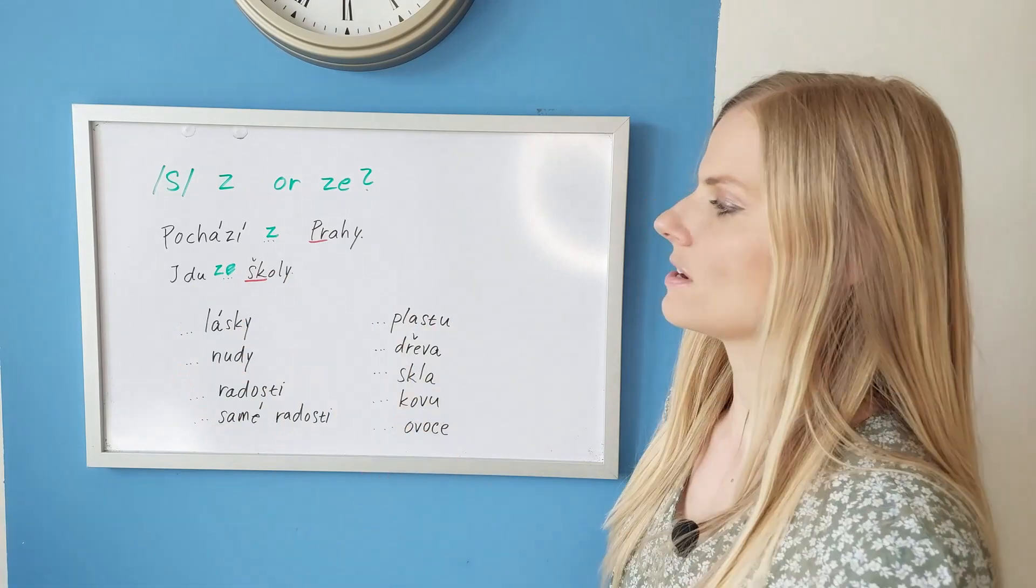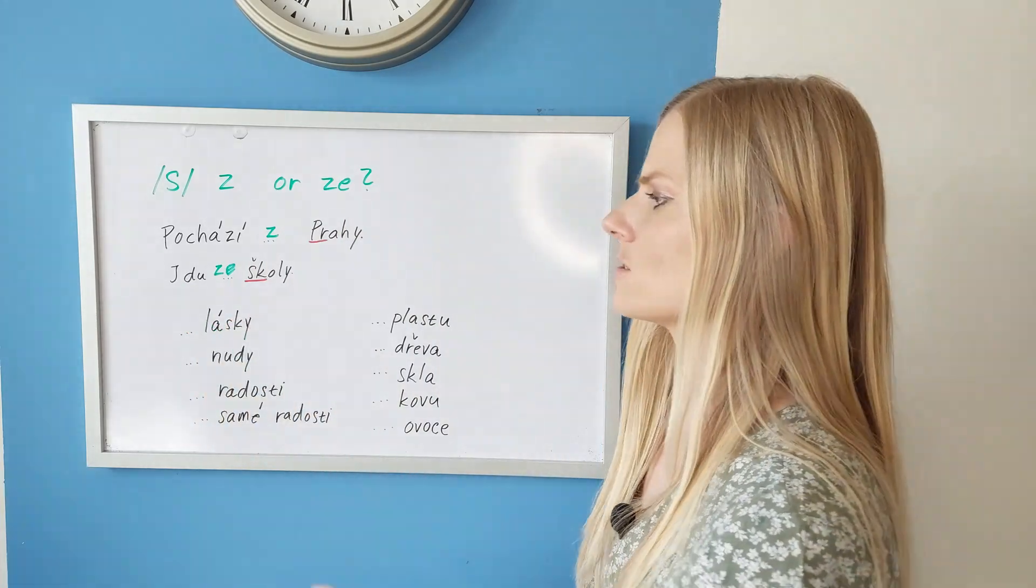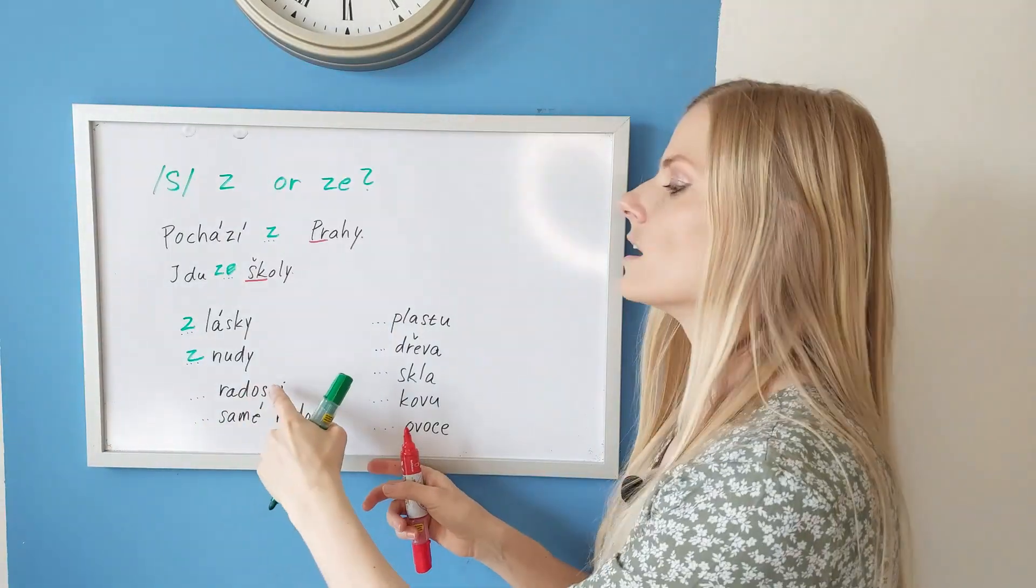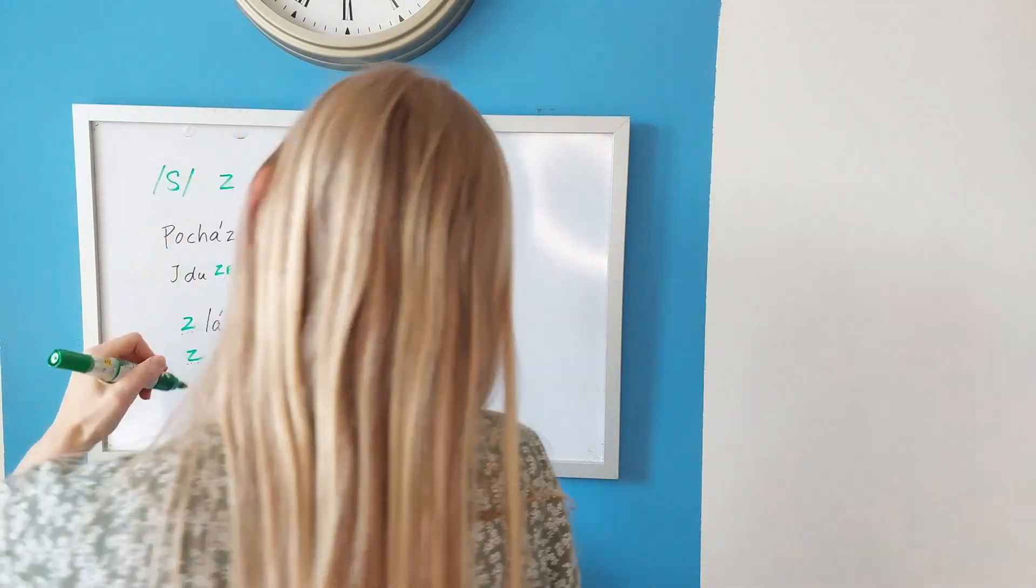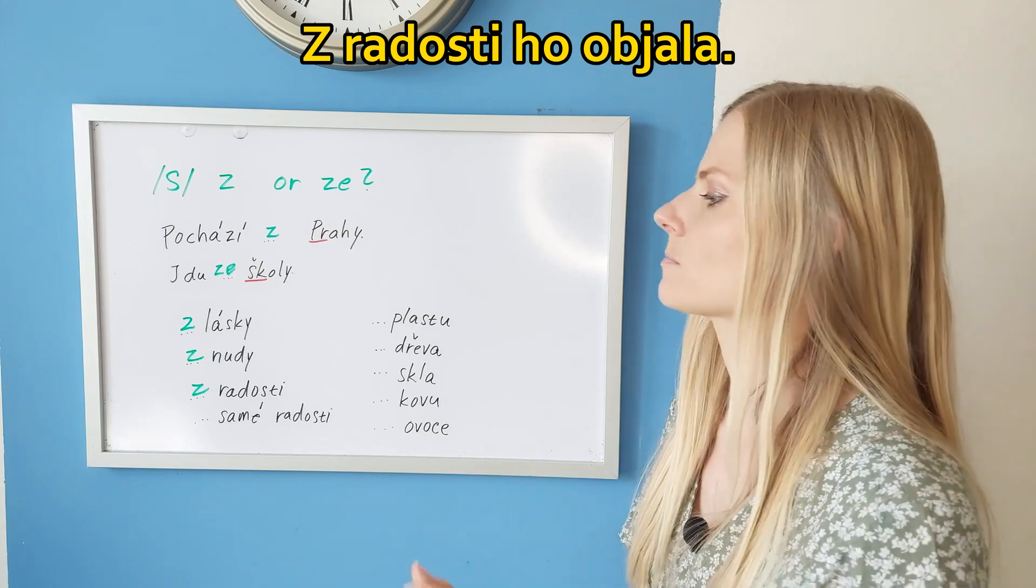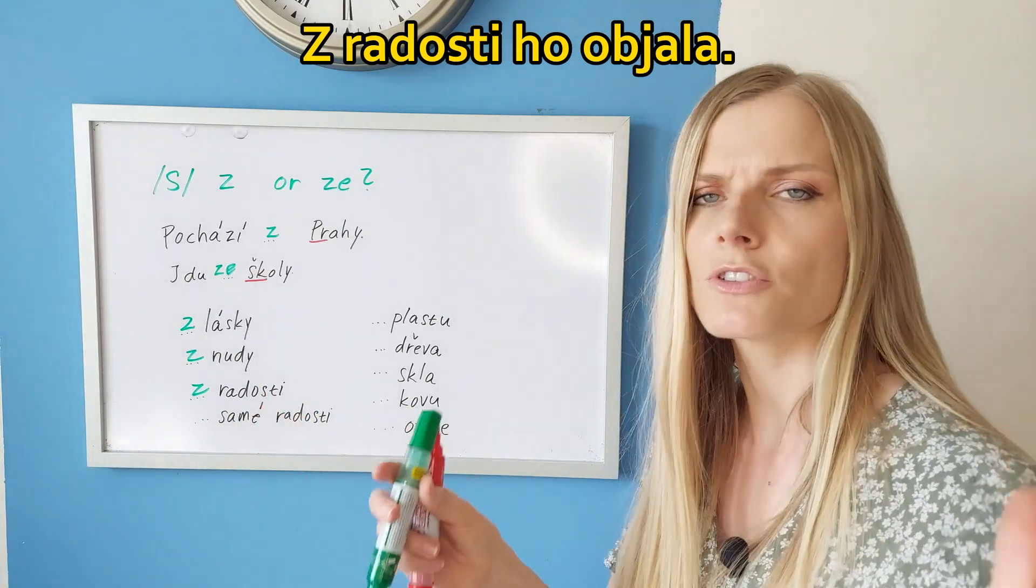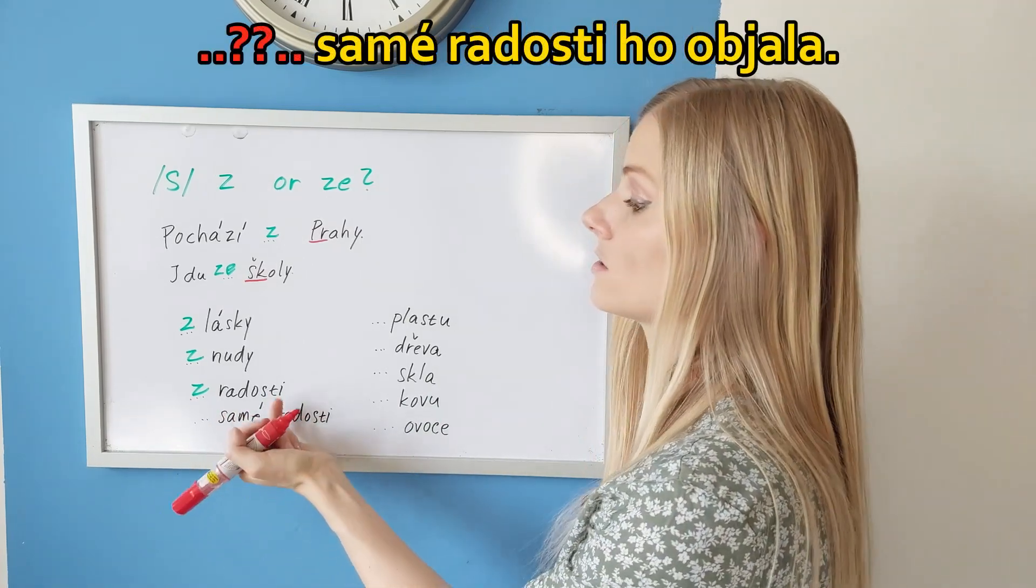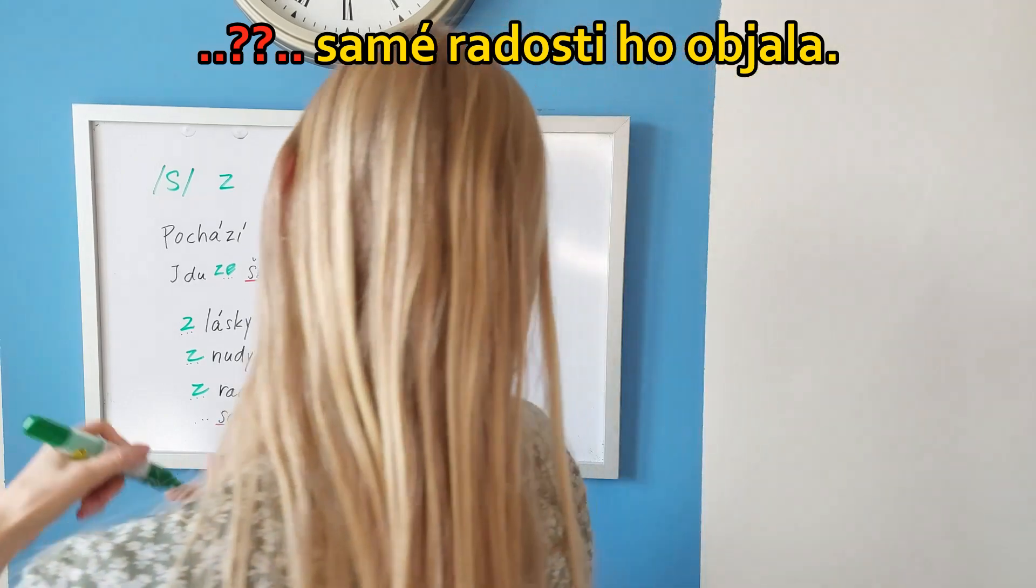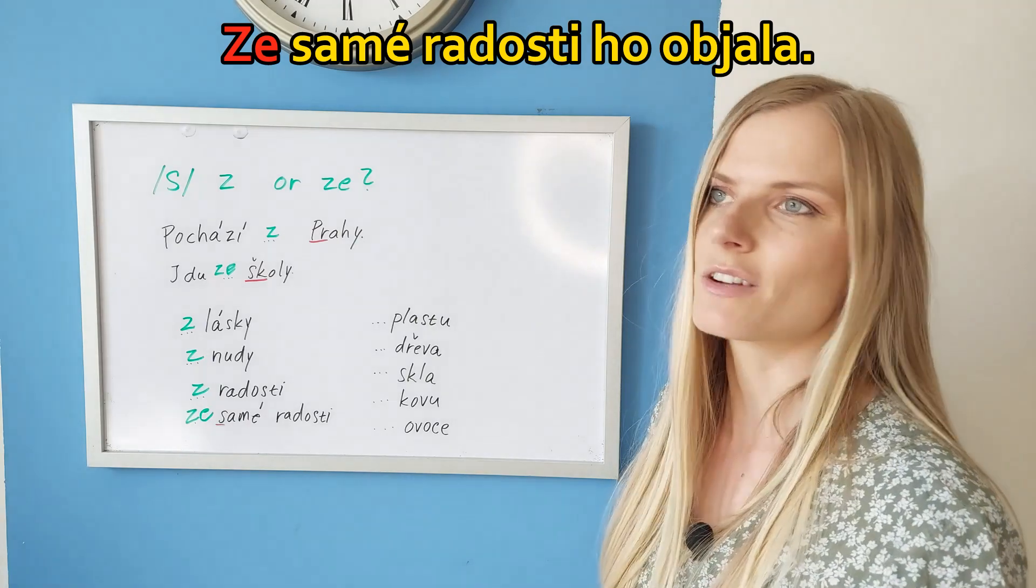And I put a couple of other phrases in English where we speak about emotions or material. Out of love - it starts with L and there is just one consonant, so this is z lásky. Out of boredom - just one consonant, so z nudy. Z radosti - also one consonant. Remember that sentence z radosti ho objala - she hugged him out of joy. If we add something else, for example samé radosti, which means pure joy, what do we put there? Again, the following word - not this one anymore - the following letter is S. And we cannot combine z and s, so we say ze. Because this is helping us to pronounce ze samé radosti. It gives us a little break.